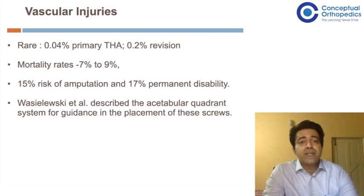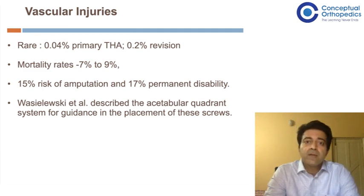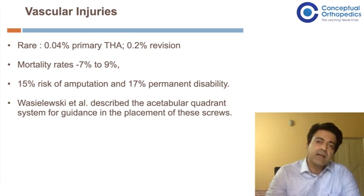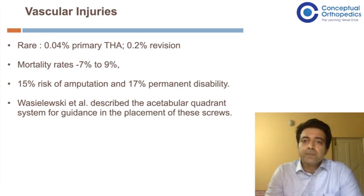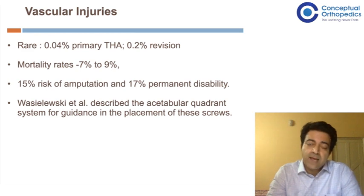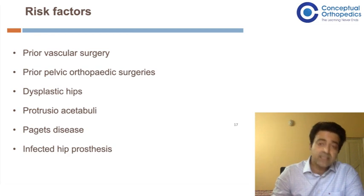Vascular injuries are rare — about 0.04% in primary and 0.2% in revision surgeries. Mortality rates are less than 10%, but there is a risk of permanent disability if not treated well. A useful classification is the Vasilevsky classification, which describes and classifies the acetabulum into a quadrant system. Vascular injuries are most common when putting screws in an uncemented cup scenario.